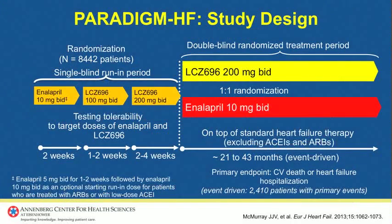We designed a trial called the PARADIGM Heart Failure Study to test the hypothesis that Secubitril-Valsartan would benefit patients with heart failure and reduced ejection fraction to a greater extent than the standard-of-care therapy, Enalapril. We randomized patients after an active run-in period — patients were initially treated with Enalapril open-label, followed by LCZ-696, and then titrated up, to maximize doses of both comparator Enalapril and active agent LCZ-696. After the run-in period, patients were randomized to LCZ-696 200 mg twice a day or Enalapril 10 mg twice a day, and followed for a median of 27 months.